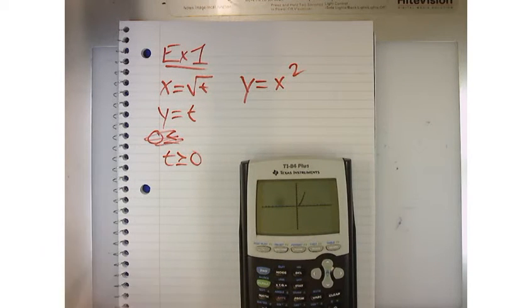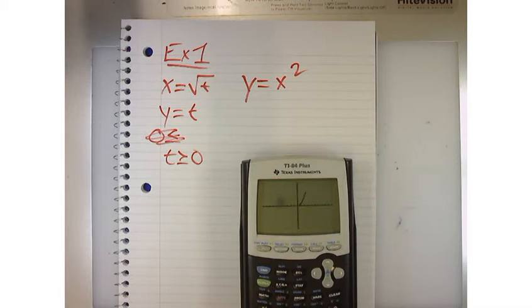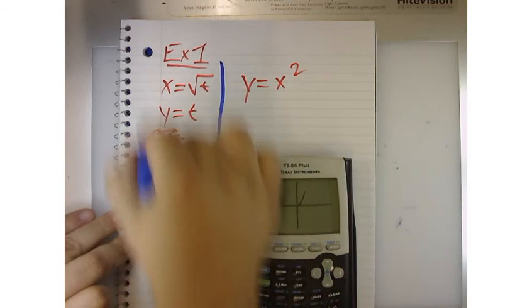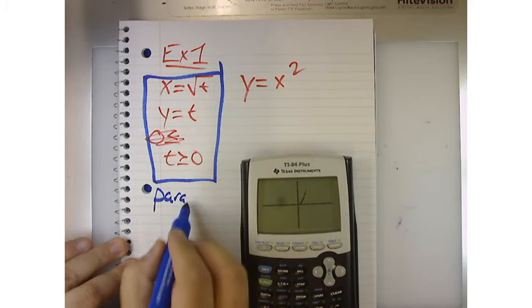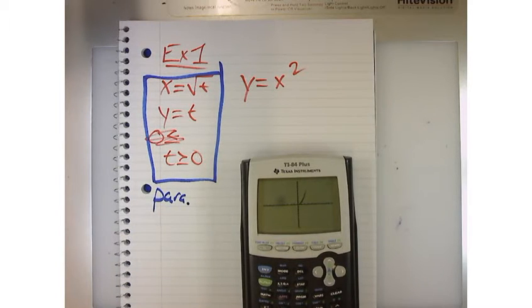So, to my left, all this stuff, this is the parametric equation stuff, right? That's parametric. How do I make the parametric look like the Cartesian?